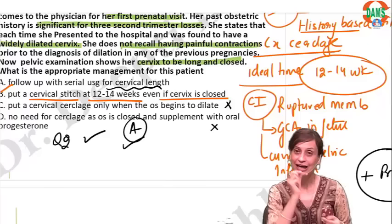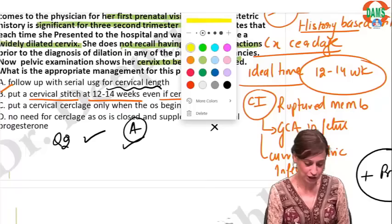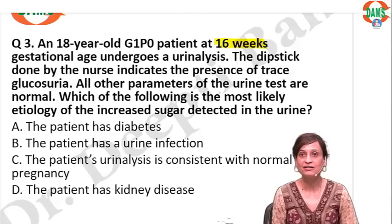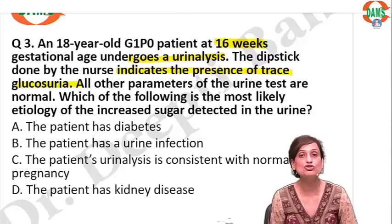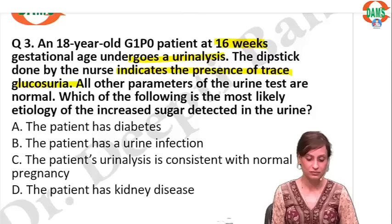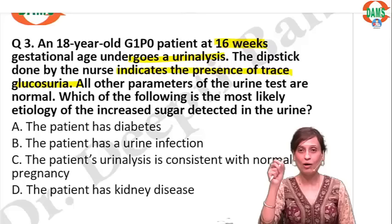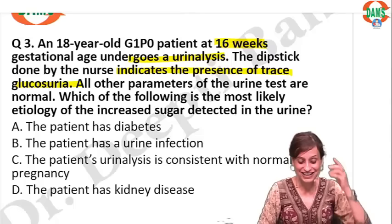Are you ready for question number 3? Let's move on. Your patient is 16 weeks pregnant and undergoing a urine analysis. A dipstick by the nurse indicates presence of glycosuria. All other parameters of the urine test are normal. Which of the following is the most likely etiology? Let's see how many of you can commit a correct answer.